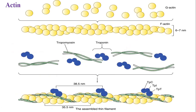The second important protein is actin, the major constituent of the thin filament, just as myosin is the major constituent of the thick filament. The thin filament is a combination of three parts: actin, troponin, and tropomyosin.